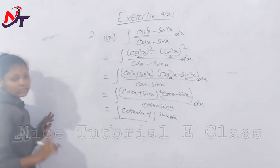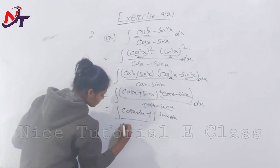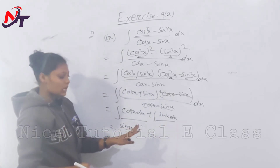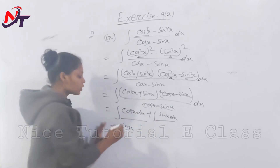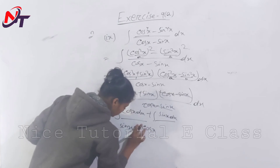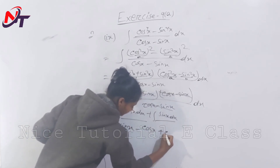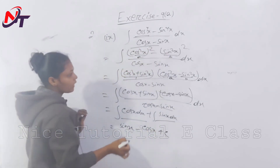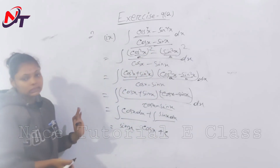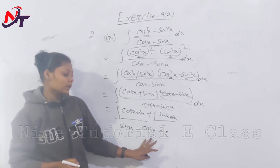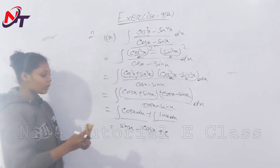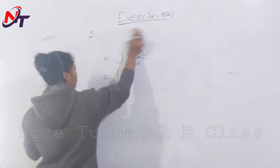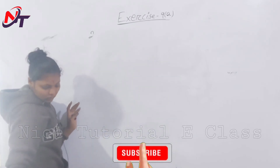Dividing by (cos x minus sin x), those cancel. We get integration of (cos x plus sin x) dx, which equals sin x minus cos x plus c.